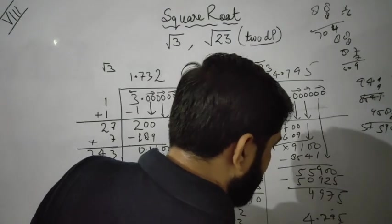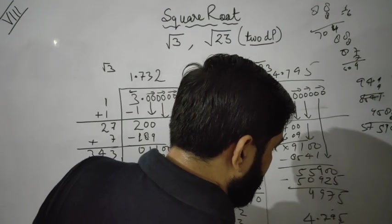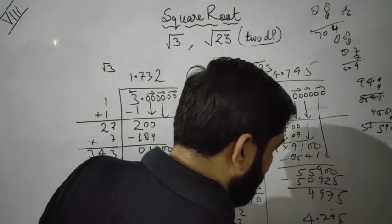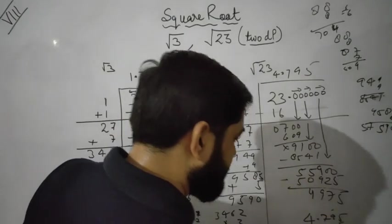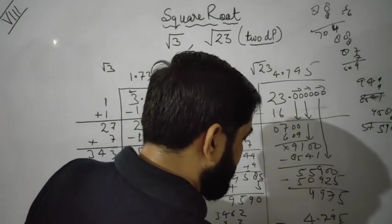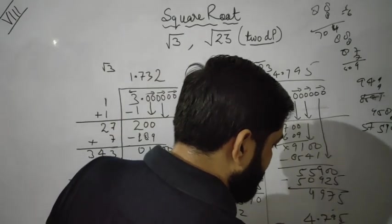So the answer is 4.80 up to two decimal places. Under root 23 equals 4.80 up to two decimal places.